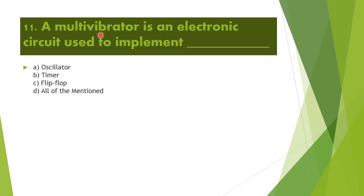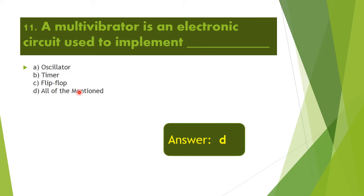Next question: A multivibrator is an electronic circuit used to implement — Option A: oscillator. Option B: timer. Option C: flip-flop. Option D: all of the above. A multivibrator can be used to implement an oscillator, timer, and flip-flop. Therefore, Option D is the right answer.